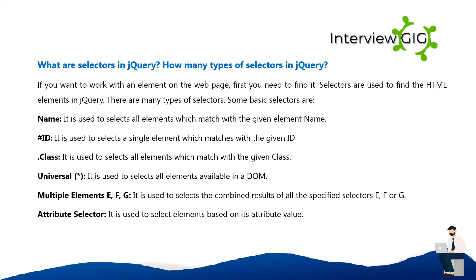What are the types of selectors in jQuery? Selectors are used to find HTML elements in jQuery. The basic selectors are: name — selects all elements matching the given element name; #id — selects a single element matching the given ID; .class — selects all elements matching the given class; universal — selects all elements available in the DOM; multiple elements (E, F, G) — selects the combined results of all specified selectors; attribute selector — selects elements based on their attribute value.